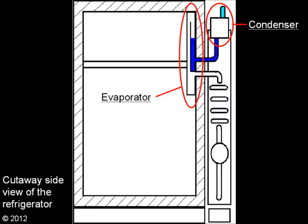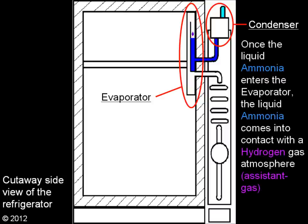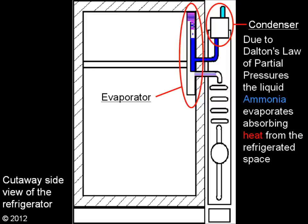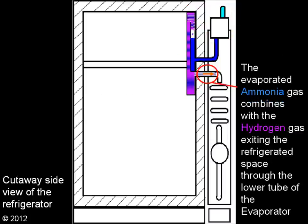This is a cutaway side view of a typical RV refrigerator. Once the ammonia enters the evaporator, the liquid ammonia comes into contact with a hydrogen gas atmosphere. This is referred to as the assistant gas. Due to Dalton's law of partial pressures, the liquid ammonia evaporates, absorbing heat from the refrigerated space. The evaporated ammonia gas combines with the hydrogen gas, exiting the refrigerated space through the lower tube of the evaporator.